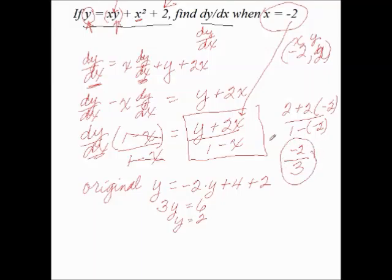Negative 2 thirds is the correct answer for the value of this derivative of this implicit function when x is negative 2. I hope this gives you an example you can follow. Thank you.